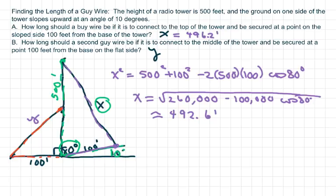If it's connected to the middle, that means the length here is 250 feet. So all I'm going to use here is the Pythagorean theorem, so our Y is actually going to be kind of like our C.